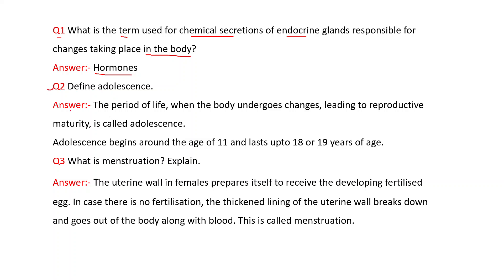Answer: The period of life when the body undergoes changes leading to reproductive maturity is called adolescence. Adolescence begins around the age of 11 and lasts up to 18 or 19 years of age.